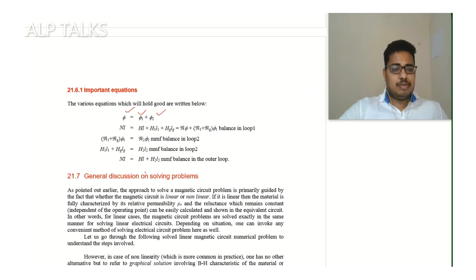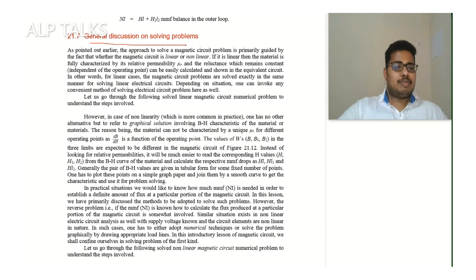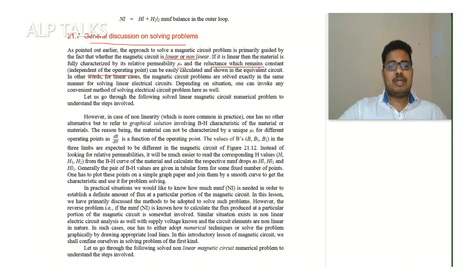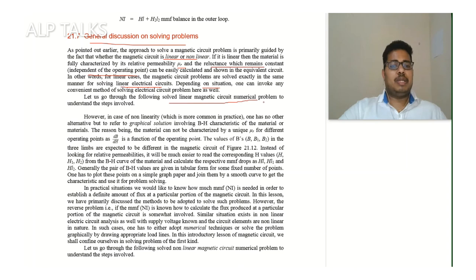General discussion on solving problems: the approach to solve a magnetic circuit problem is primarily guided by whether the magnetic circuit is linear or not. If it is linear, the material is fully characterized by relative permeability μᵣ, and the reluctance — which remains constant independent of operating point — can be easily calculated and shown in the equivalent circuit. For linear cases, magnetic circuit problems are solved exactly in the same manner as solving linear electrical circuits, and any convenient method of solving electrical circuits can be applied here as well.